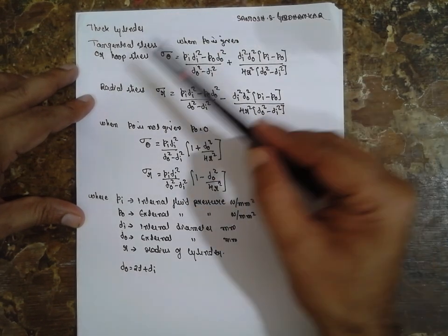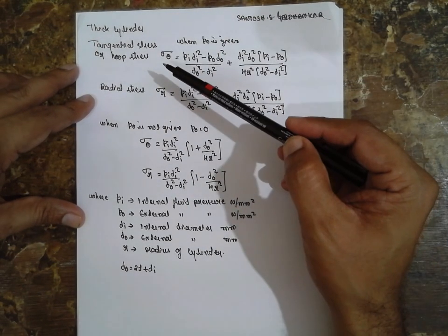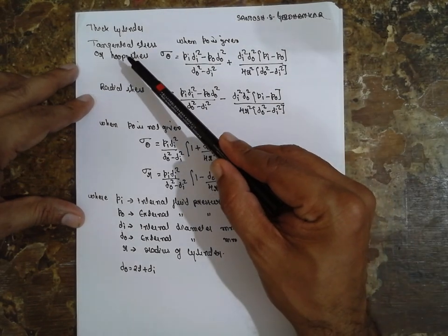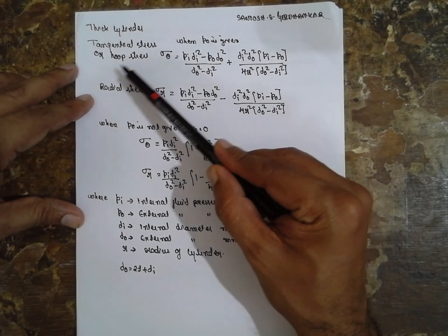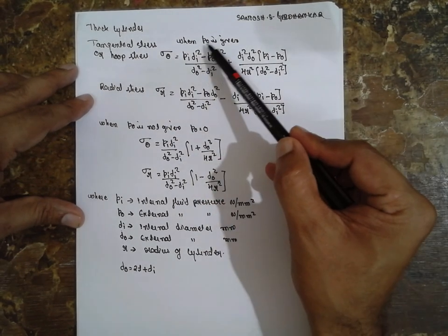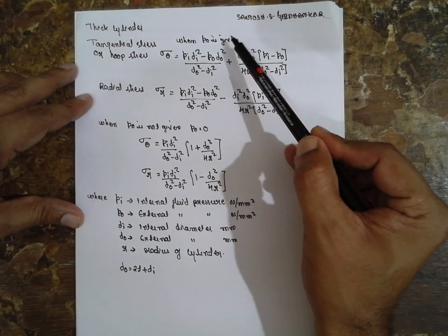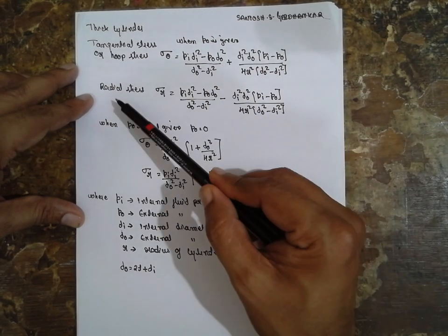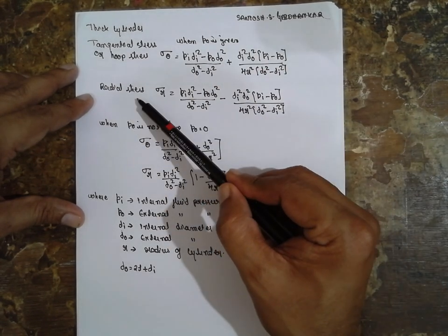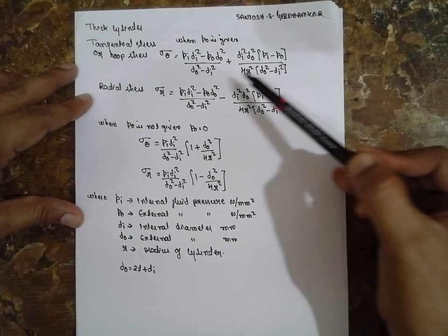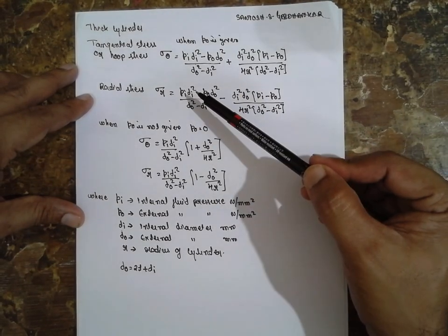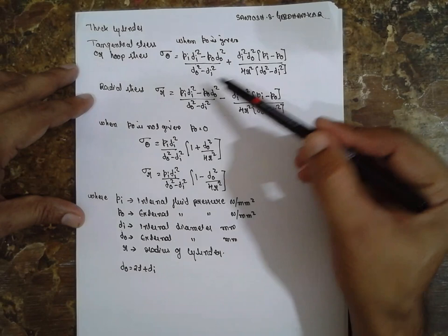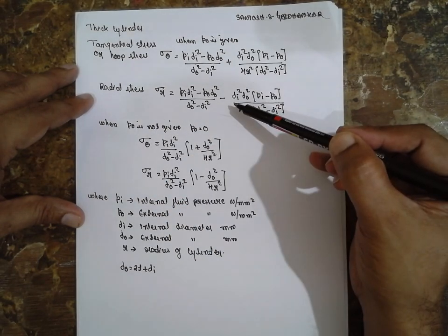I am directly writing the formula of thick cylinder here. Tangential stress or hoop stress — when P0 is given, this is the formula I am going to use. And radial stresses — this is the formula I am going to use. Now for hoop stress, it is positive. For radial stress, it is negative.